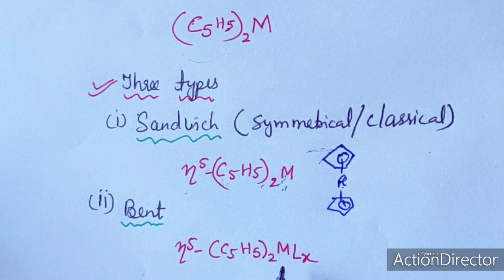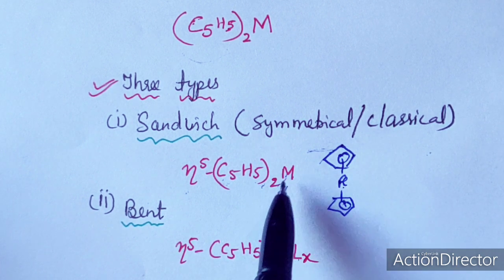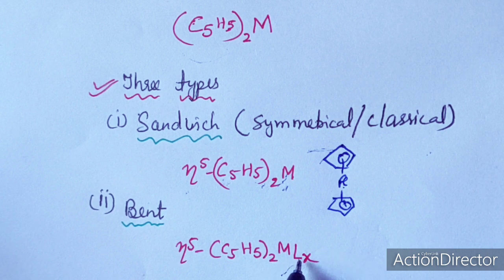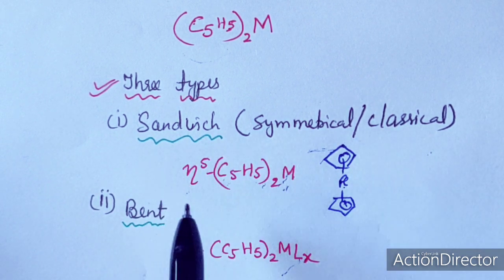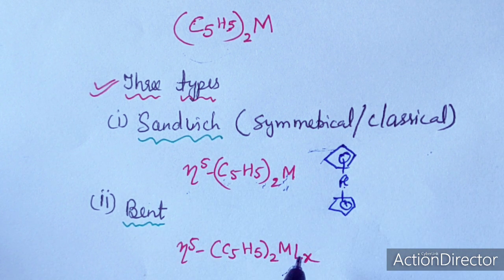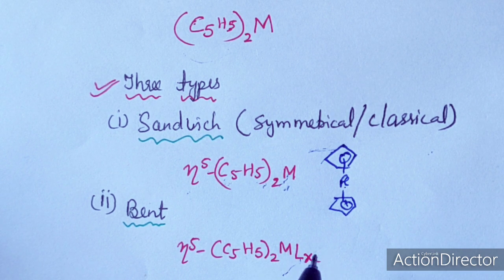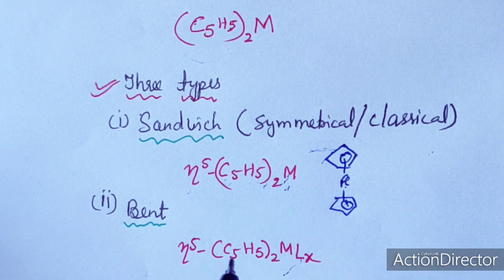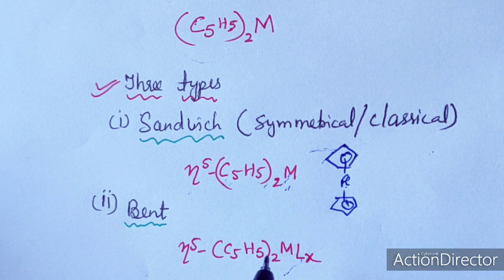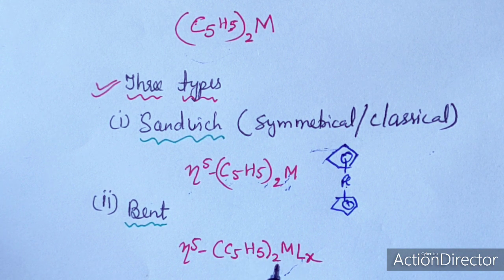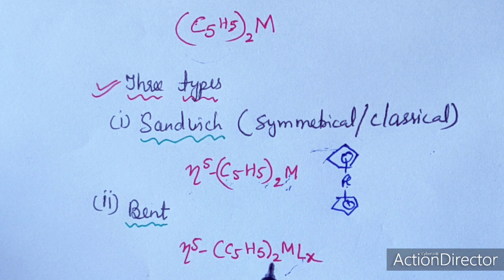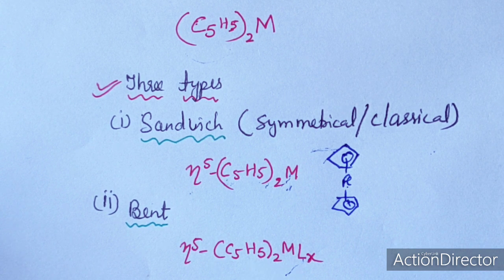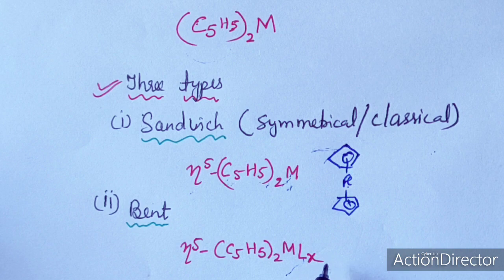The second type is bent metallocene. In bent metallocene, one or more extra ligands L are attached to the sandwich metallocene. This L may be a halide or an alkyl group. Due to this L, the symmetry changes to asymmetry. Examples include titanocene dichloride or zirconocene dichloride.